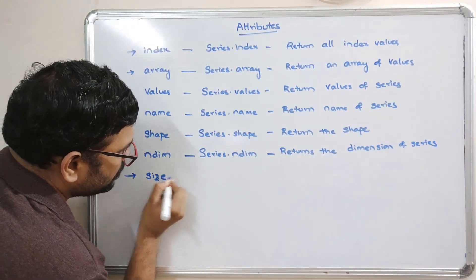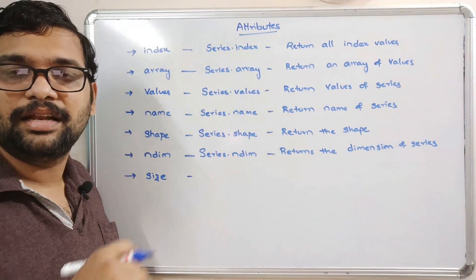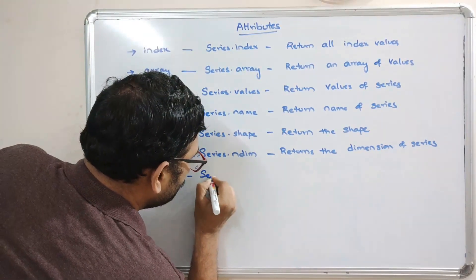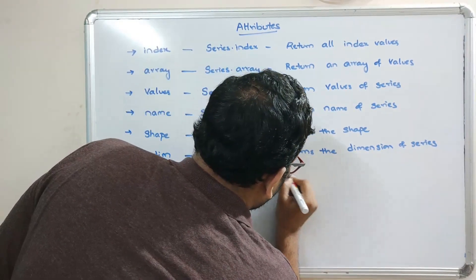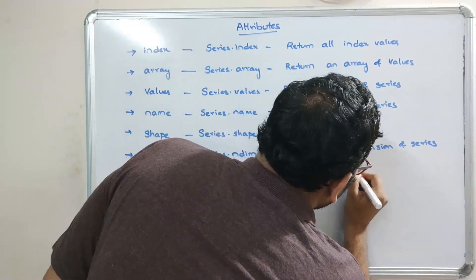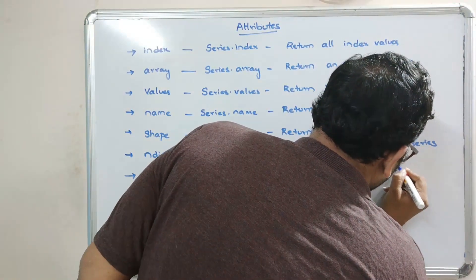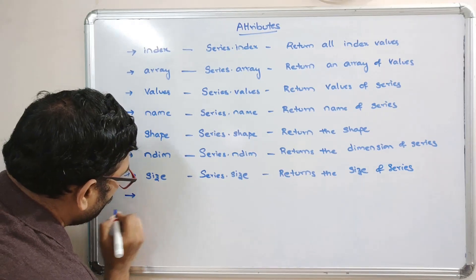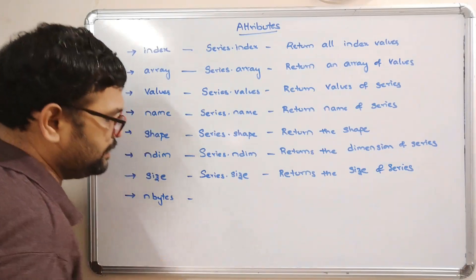The size attribute returns the number of elements in the series — the number of values in that particular series. The syntax is series.size and it returns the size of the series, that is, the number of elements available.